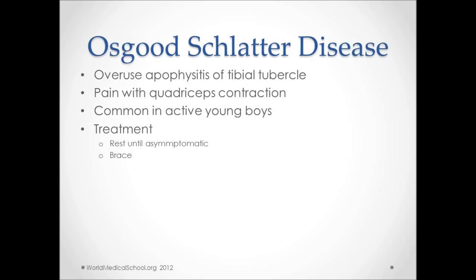Osgood-Schlatter disease relates to overuse apophysitis of the tibial tubercle with pain upon quadriceps contraction. It is commonly seen in young, active boys involved in sports. Treatment is typically rest, and bracing may be necessary.